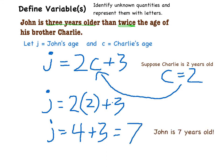Remember, j was just John's age. So if Charlie is two, and the original statement holds, we can conclude that John is seven years old.